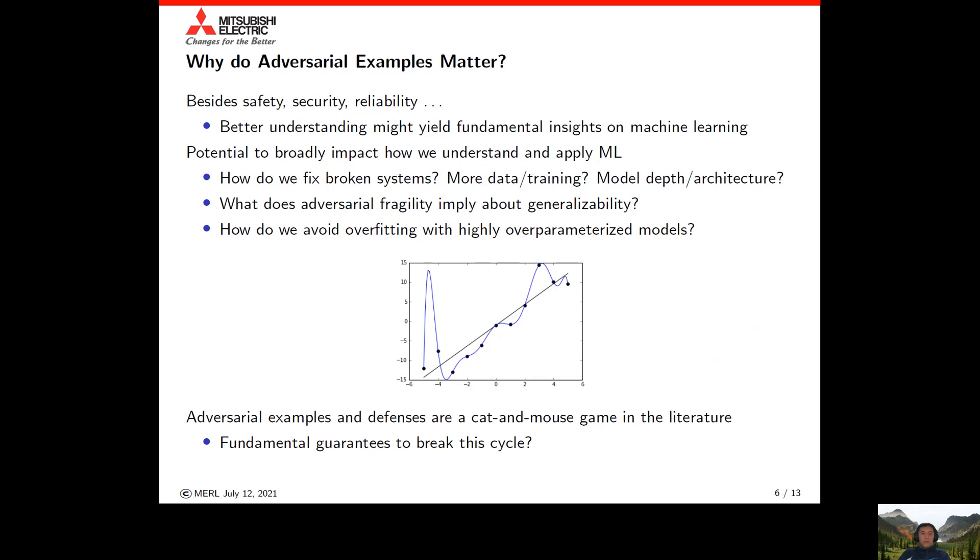With the literature looking at adversarial examples and defenses, it's been a back and forth cat and mouse game with new defenses being developed and then new attacks demonstrating their shortcomings. The interesting question is, are there any fundamental guarantees that can help break this cycle?